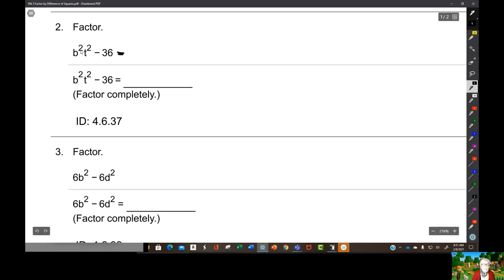Now, b²t² is really bt in parentheses squared, and 36 is 6². So this factors—bt, bt, 6 and 6, plus and minus—and you're done.